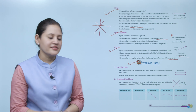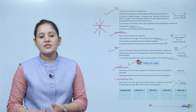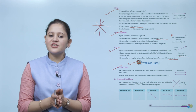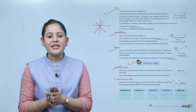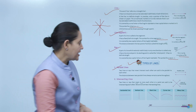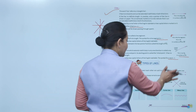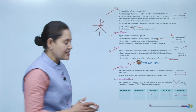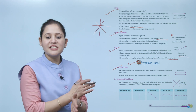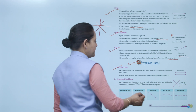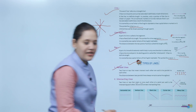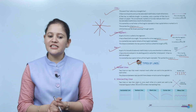First type is parallel lines. Two lines or rays that never intersect each other are said to be parallel. The distance between two parallel lines always remains the same throughout. No matter how much we extend them, they will never intersect each other, and the distance between them will always remain constant.